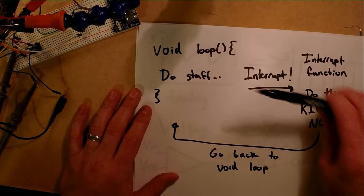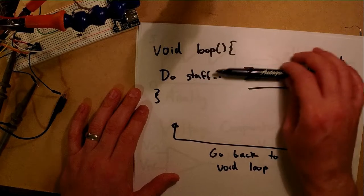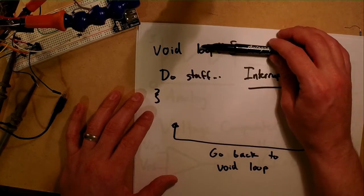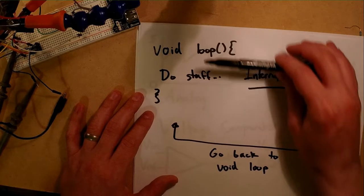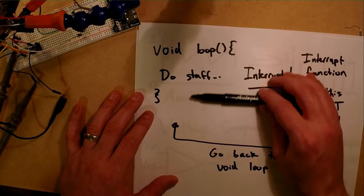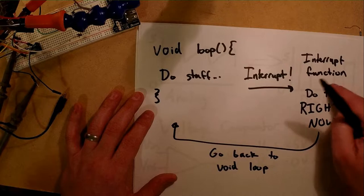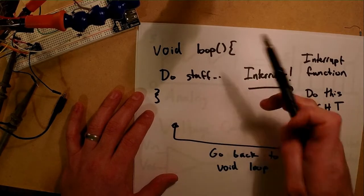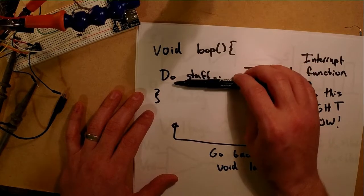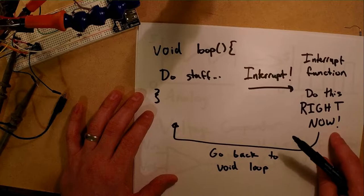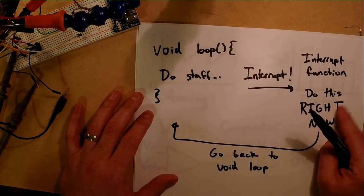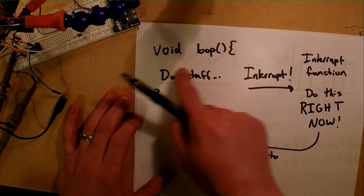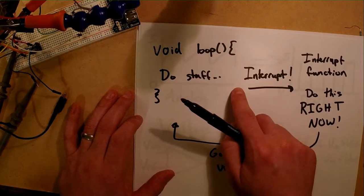We're going to use something called an interrupt in the code. The normal void loop has a bunch of instructions — reading voltages, writing to serial port — and it cycles from top to bottom repeatedly. What an interrupt does is allow us to have a second function outside that loop that can be triggered by different conditions. When this function is triggered, no matter where we are in the loop, it says: stop immediately, jump over here, do this right now. Once the interrupt function finishes, you go back to the loop, pick up where you left off, finish the loop, and start over until the interrupt is triggered again.